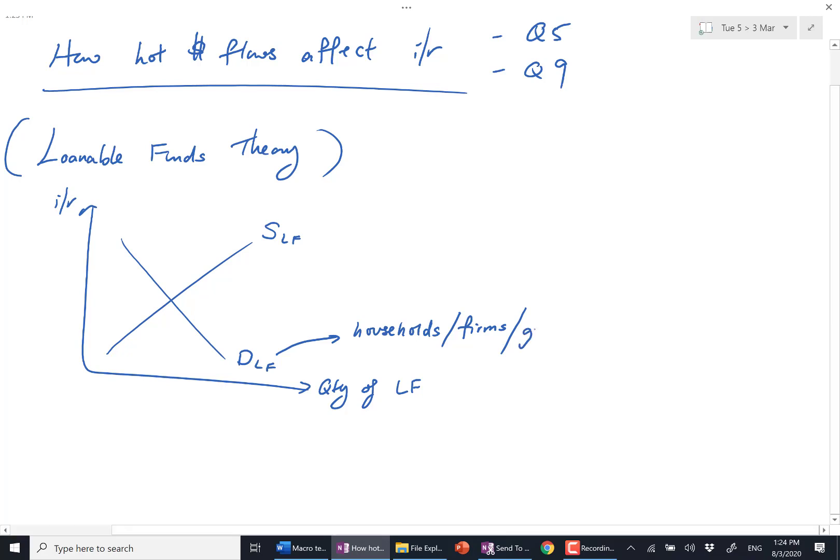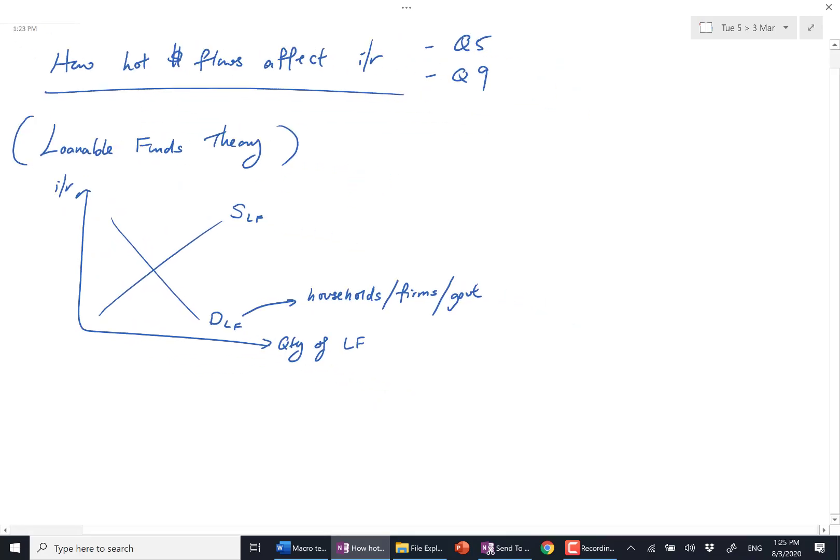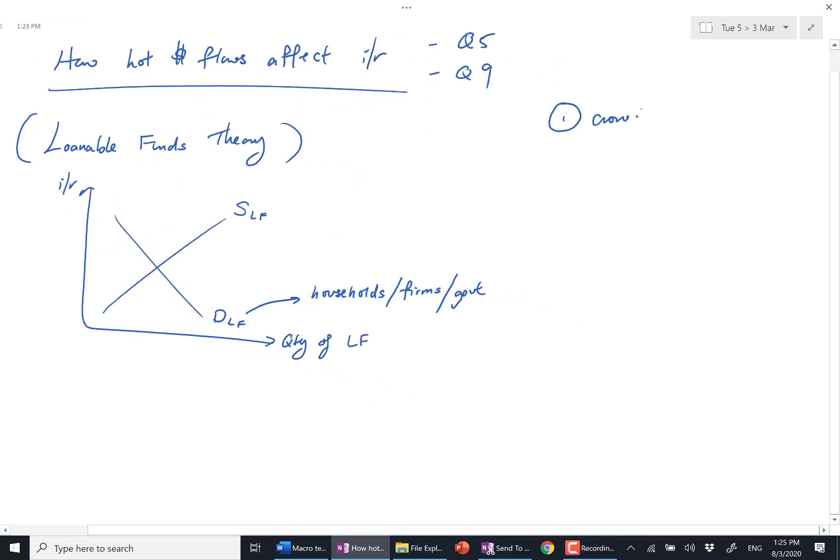Government. The government needs to borrow as well. From here you can understand crowding out. Crowding out means that you run expansionary fiscal policy but you don't have money, you need to borrow to fund your policy. When that happens, demand for loanable funds goes up and you crowd out private investments and private consumption.